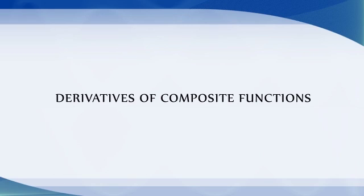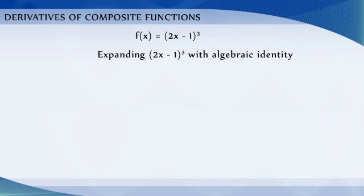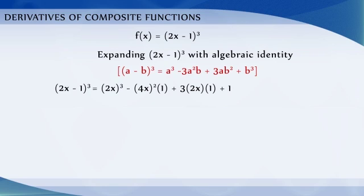Derivatives of composite functions. Consider the function f(x) = (2x − 1)^3. To find the derivative of this function, we first expand (2x − 1)^3 using the algebraic identity for (a − b)^3. Therefore, (2x − 1)^3 = 8x^3 − 12x^2 + 6x − 1.